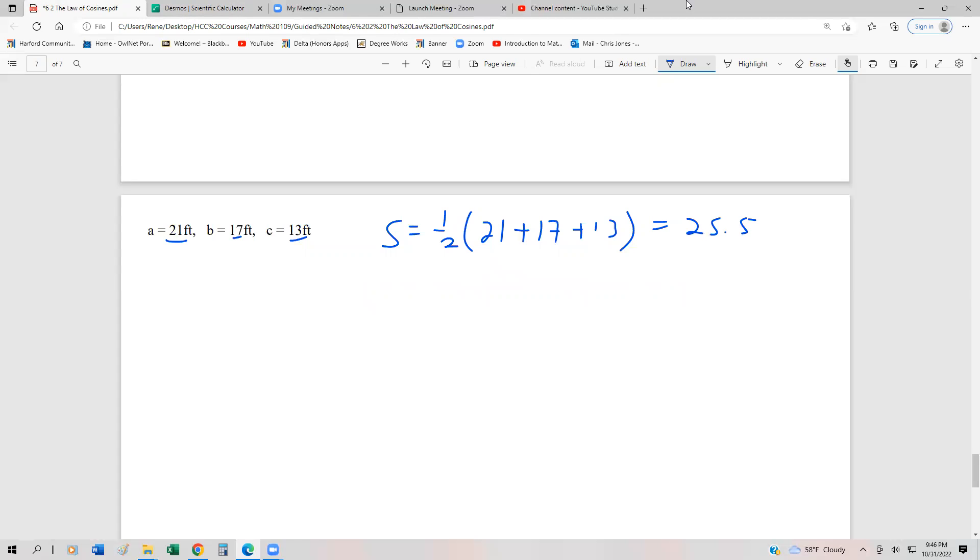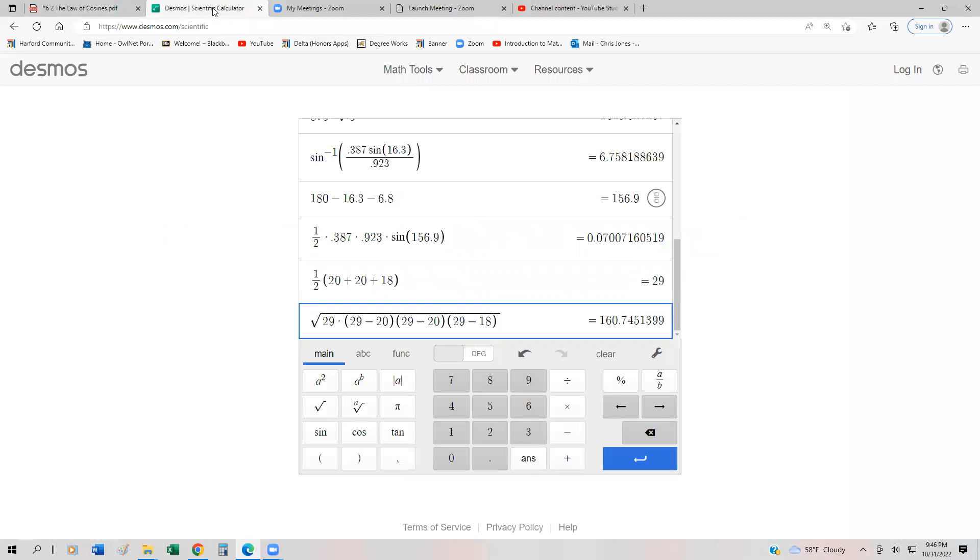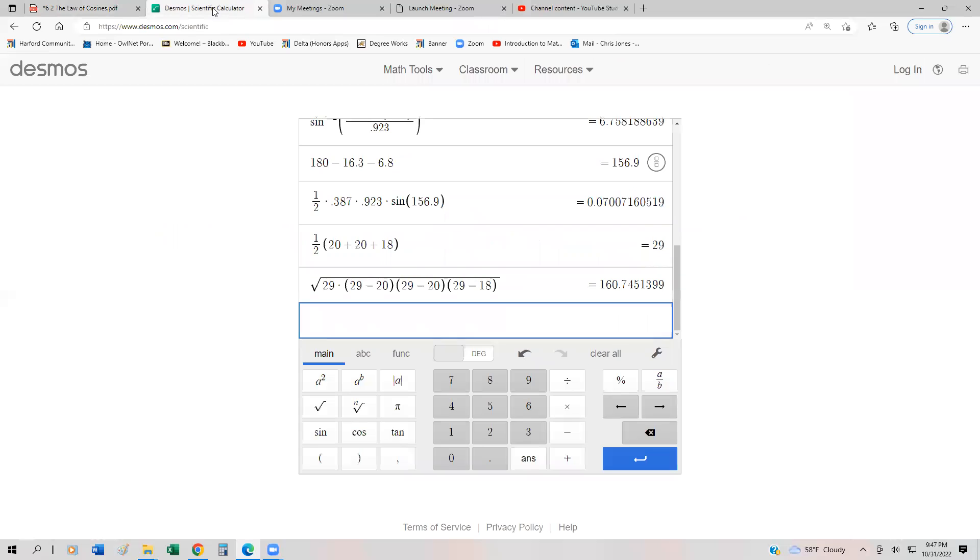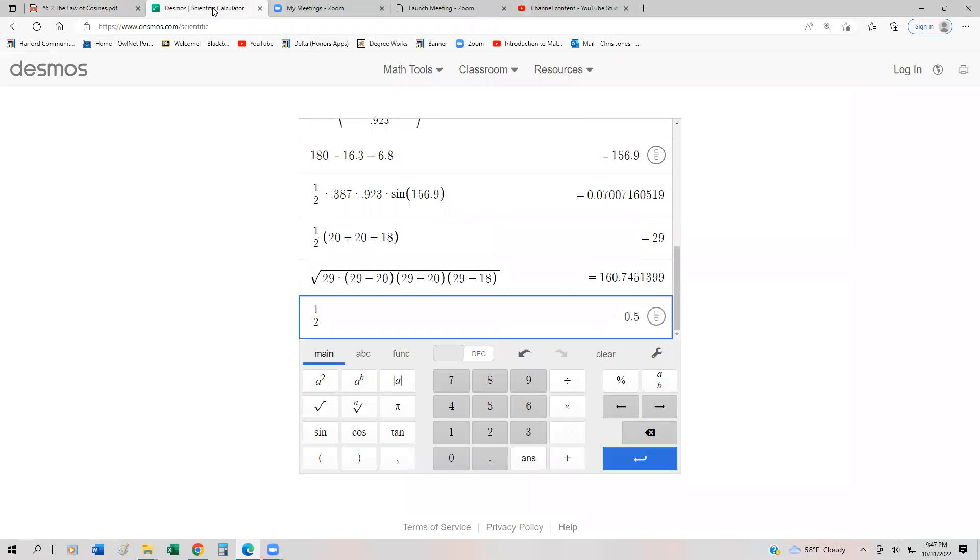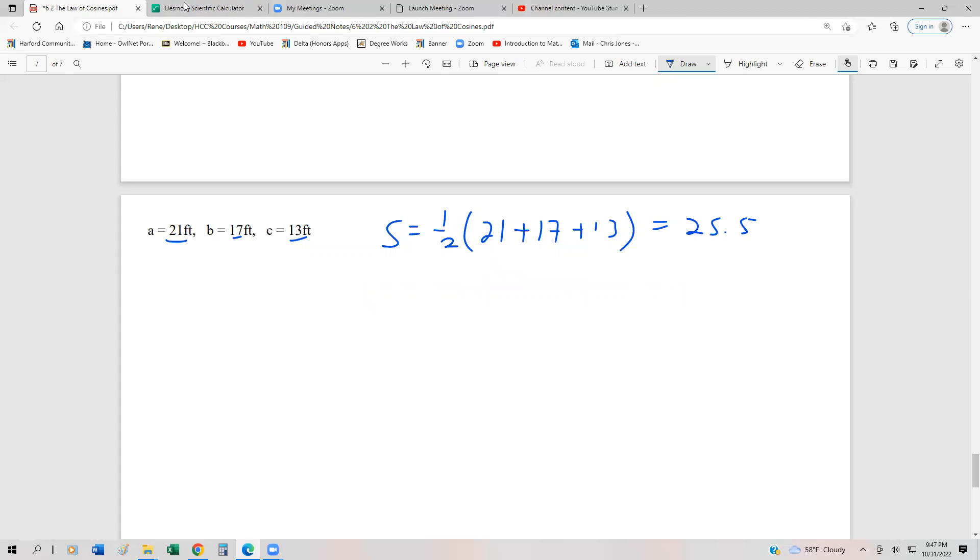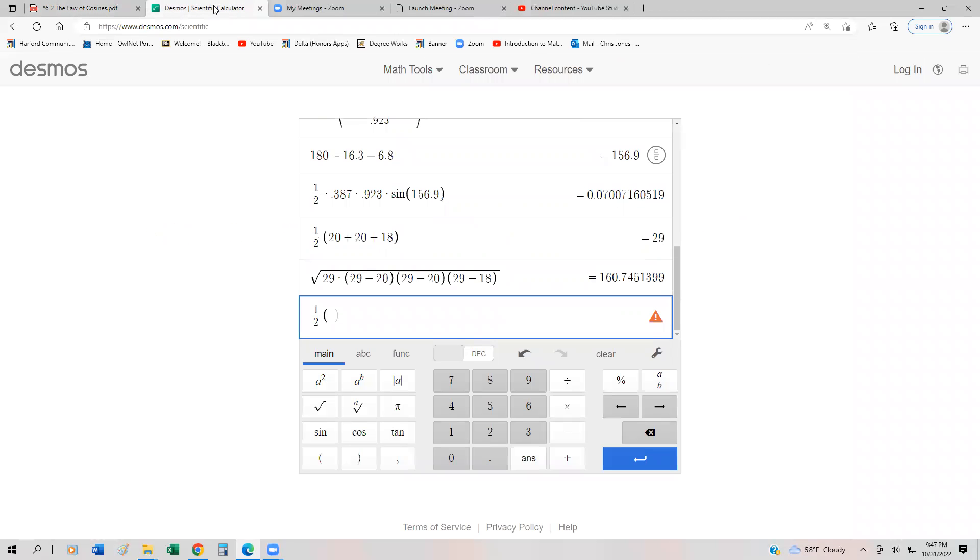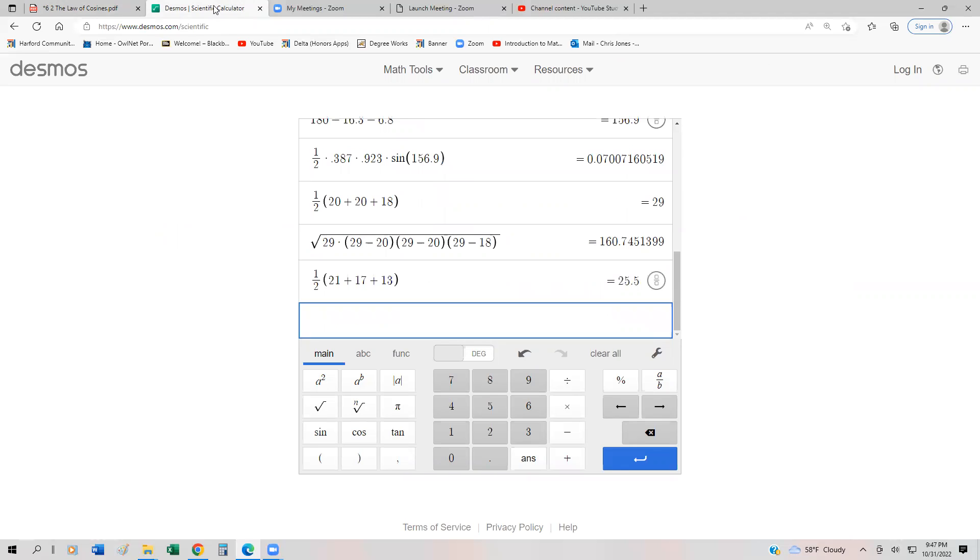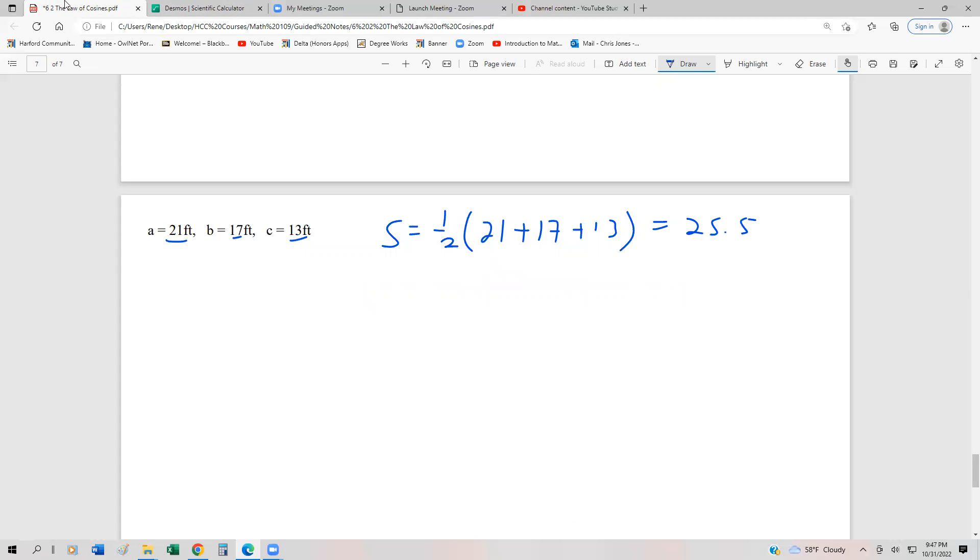But just in case we don't trust that, we should go to our calculator. And so I'm going to take half of 21, 17, and 13. 21, 17, 13 is 25.5. And now we could just go ahead and find the area.